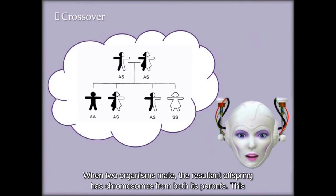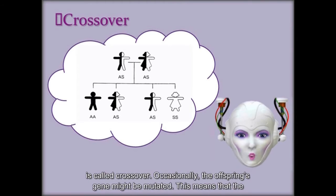When two organisms mate, the resultant offspring has chromosomes from both its parents. This is called crossover.